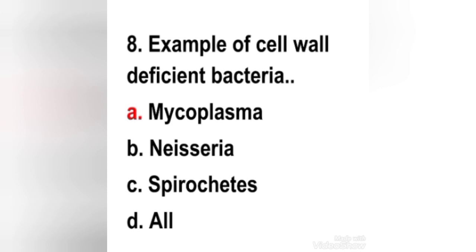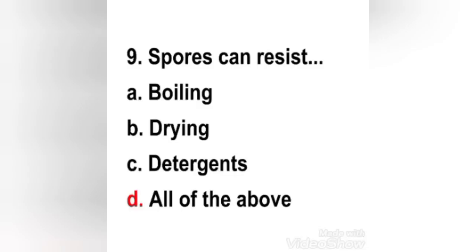Next question: which is an example of cell wall-deficient bacteria? Options: Mycoplasma, Neisseria, spirochetes, all of the above. The right answer is option A — Mycoplasma. Cell wall-deficient bacteria, also known as L-phase or L-form bacteria, are bacterial variants that lack a cell wall, although they may possess small amounts of peptidoglycan. The name L-form was given because they were discovered at the Lister Institute in London.